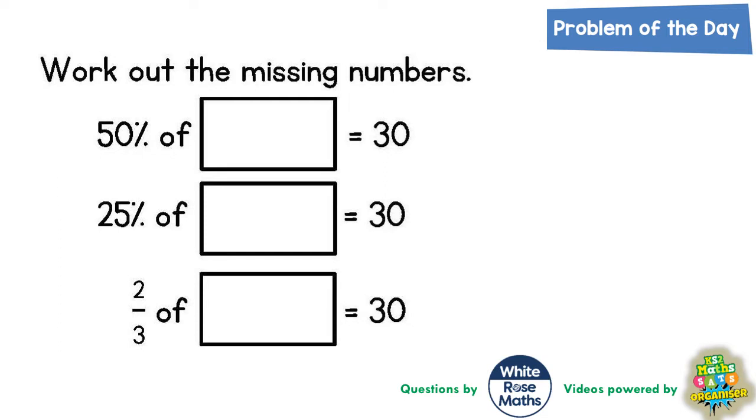Now there's a couple of ways we could do each question, but we're going to start with bar model strategies. So 50 percent of something is 30. Well if you draw yourself a bar, you know that 50 percent splits both bars in half.